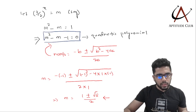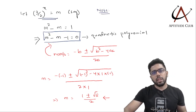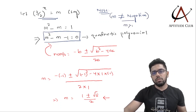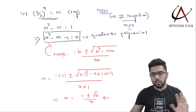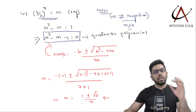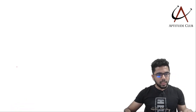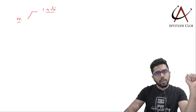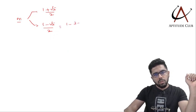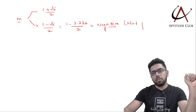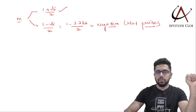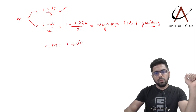Now, since m equals (3/2) to the power x, and 1.5 to any power is necessarily positive, m cannot be negative — m is definitely greater than 0. We have two roots: (1 + √5)/2 and (1 − √5)/2. Now (1 − √5)/2 equals approximately (1 − 2.236)/2, which becomes negative. So that is not possible. Only m equals (1 + √5)/2 is valid.